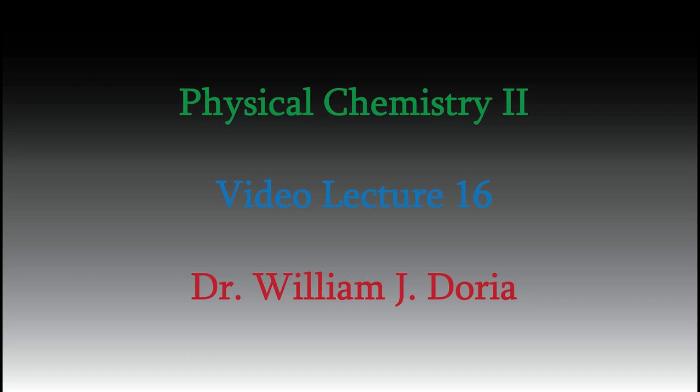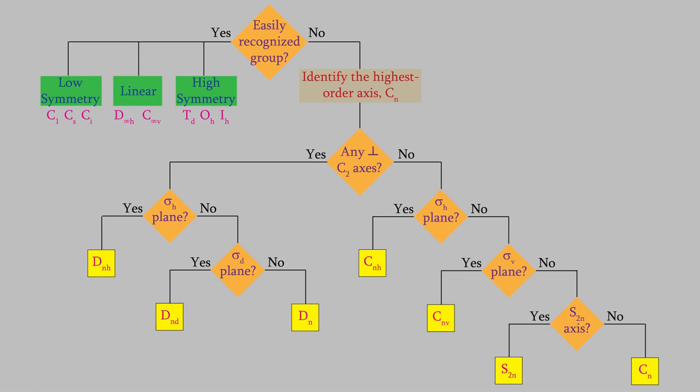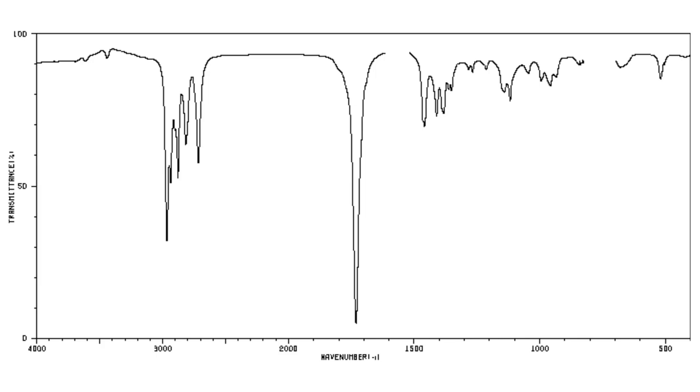Hi, and welcome back to my series of videos for Physical Chemistry 2. In the last video, we learned about the symmetry of molecules, and we saw that we can group molecules into different categories called point groups, depending on what symmetry elements the molecule contains. If you haven't seen the previous video, you'll definitely want to give it a look, because we'll use much of what we learned in that video today. Today, I want to show you how we can use what we learned about symmetry to understand infrared spectra of molecules.